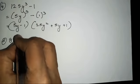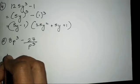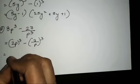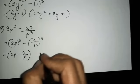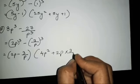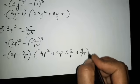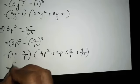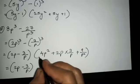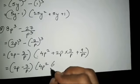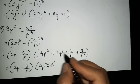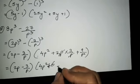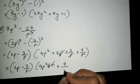The fifth one is 8p cube minus 27 upon p cube. This is going to be 2p whole cube minus 3 upon p whole cube. So we write 2p minus 3 upon p, then 4p square plus 2p into 3 upon p. The reason I have added this intermediate step is because there are fractions here — if we skip it, it will be problematic for the last step. So 3 twos are 6, p gets cancelled, giving 6, and the last term is 9 upon p square as it is.